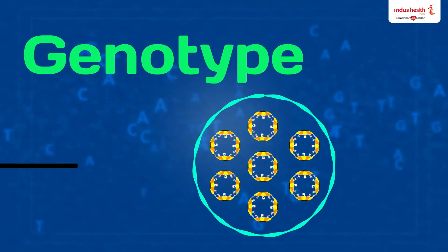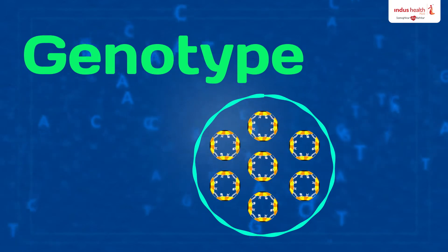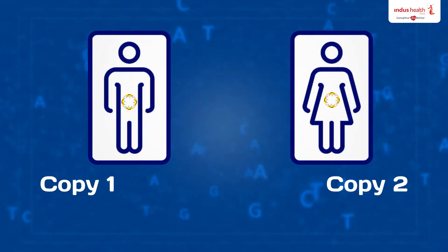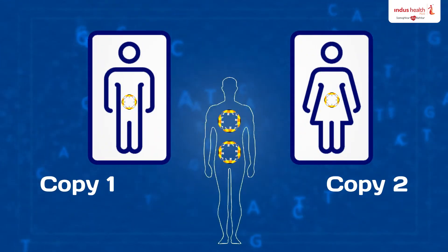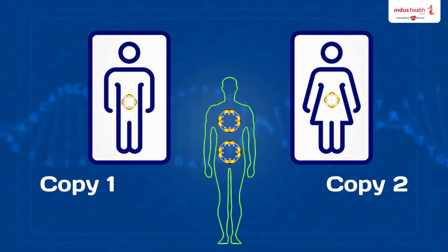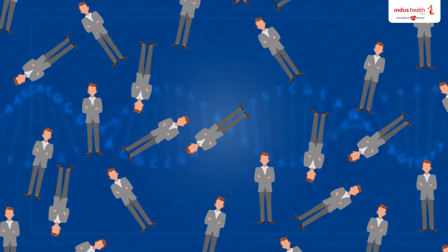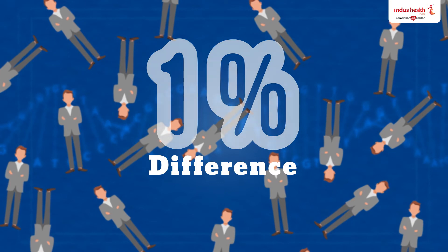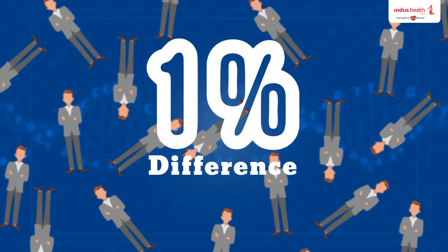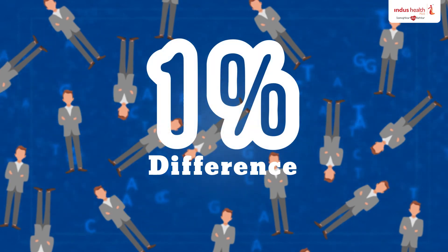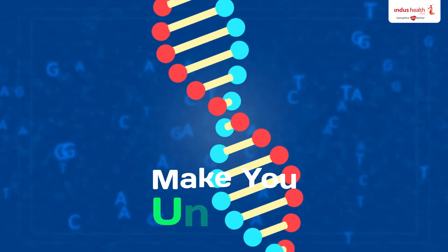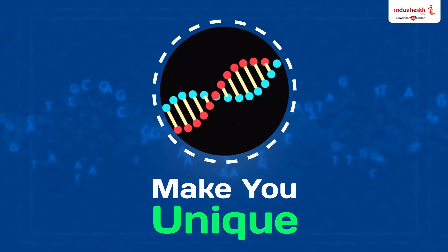A group of genes is called a genotype. Every person has two copies of each gene, one inherited from each parent. Most genes are the same in all people, but a small number of genes — less than 1% — are slightly different between people. These small differences in your genotype make you unique.